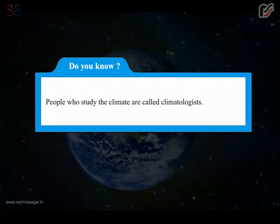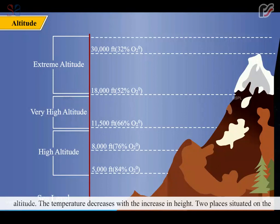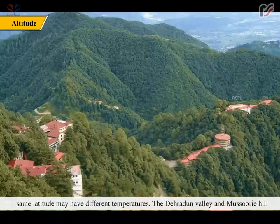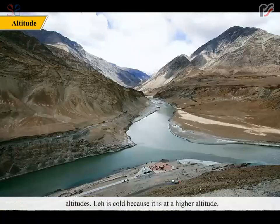Do you know? People who study the climate are called climatologists. Hill stations have a cold climate due to the height above sea level, which is called altitude. The temperature decreases with the increase in height. Two places situated on the same latitude may have different temperatures. The Dehradun Valley and Mussoorie hill station are not far away from each other but have different temperatures because of their altitudes. Leh is cold because it is at a higher altitude.